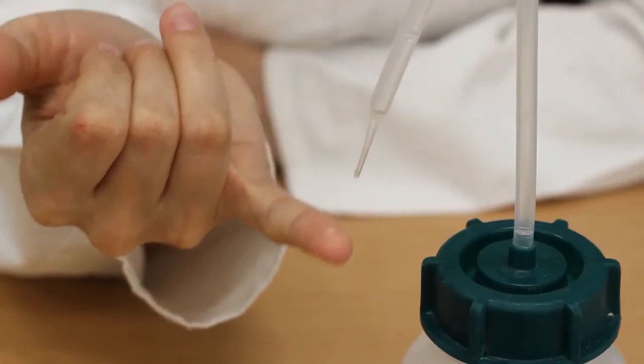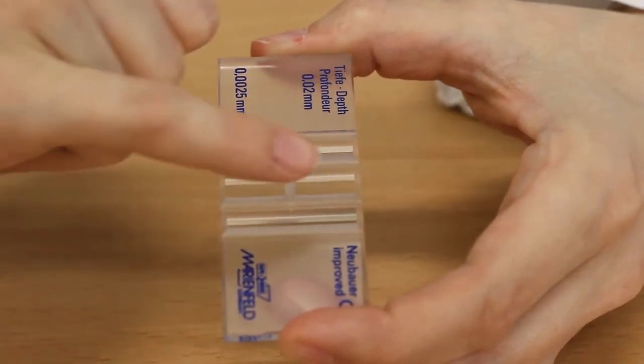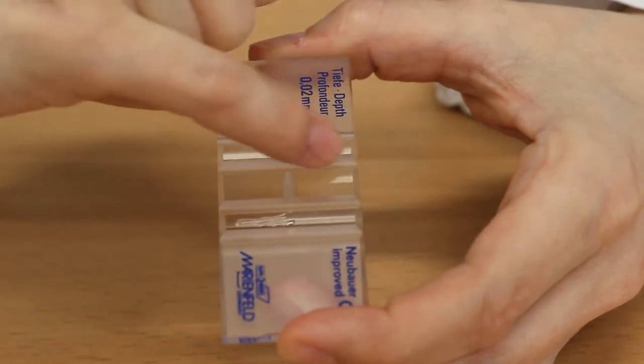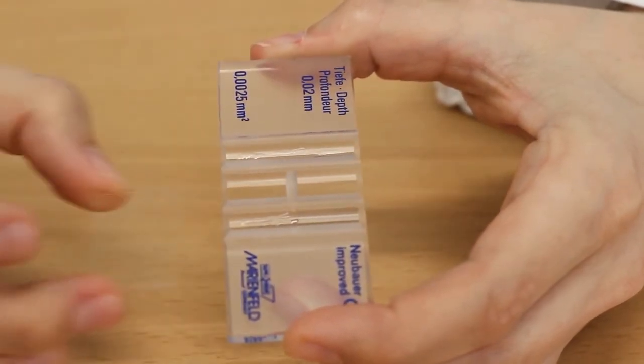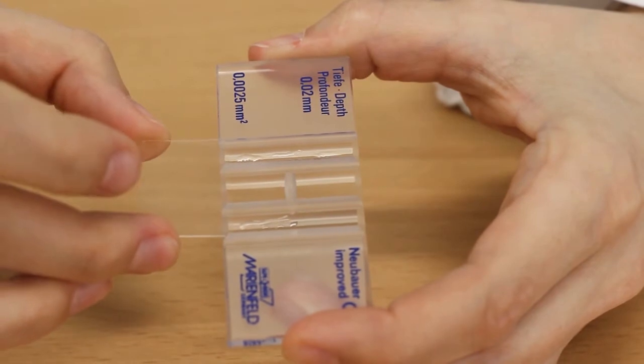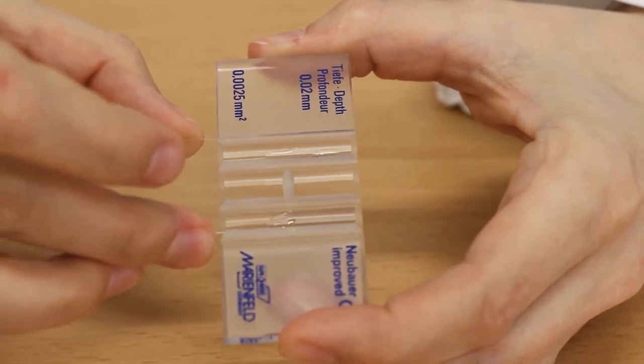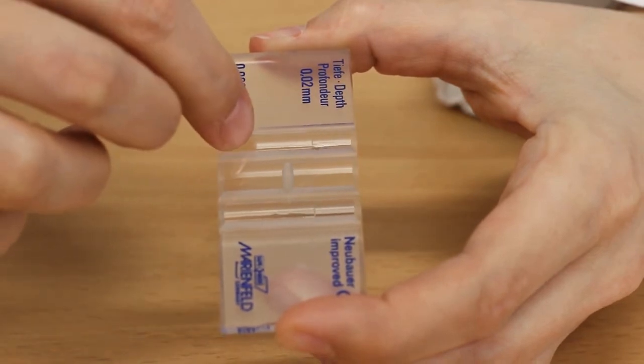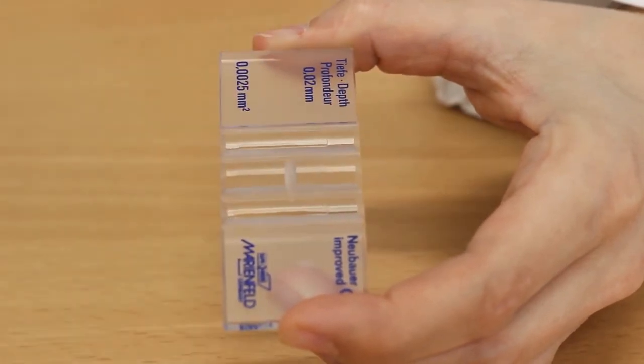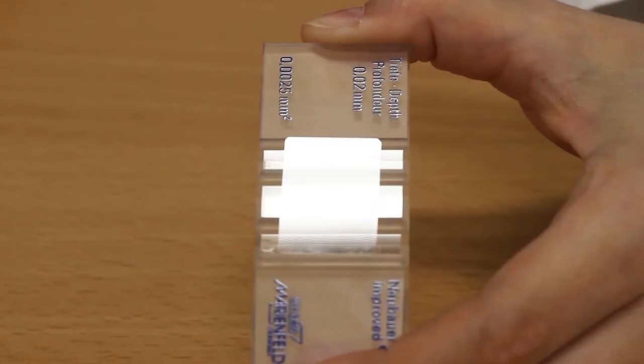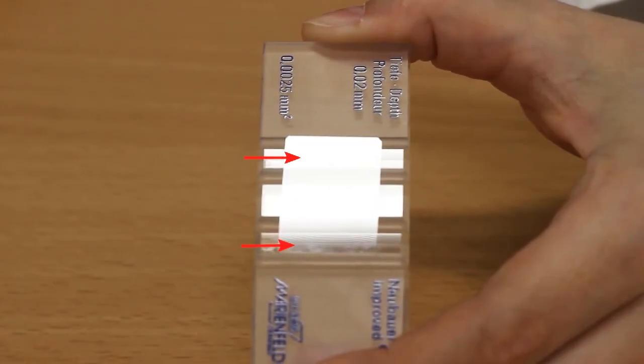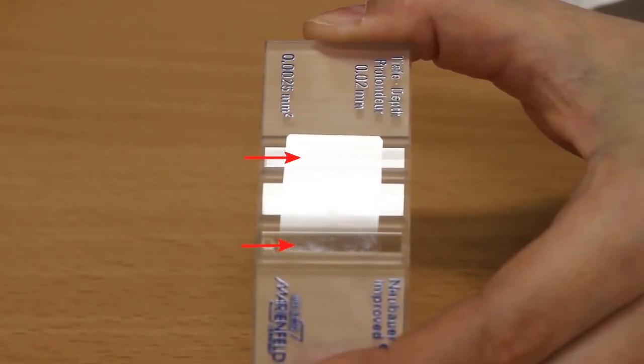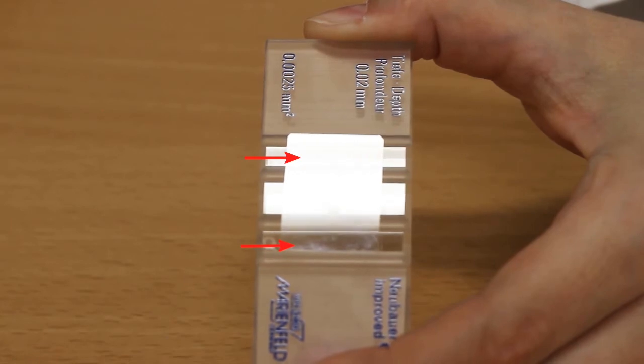To use a hemocytometer, moisten the two support structures with ethanol. Push the coverslip over the two support structures and wait until the ethanol evaporates. Make sure you're using a proper hemocytometer coverslip. Regular microscopy coverslips are not suited and they will bend and distort the volume being analyzed. If the coverslip is placed correctly, ring-shaped interference patterns called Newton rings can be observed.